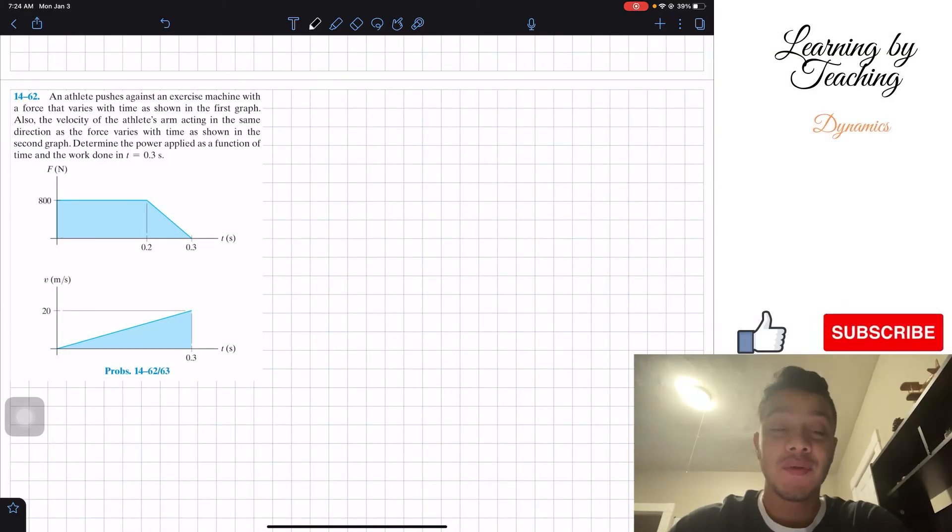Welcome back everyone to learning by teaching. Today we're in dynamics and we're going to solve problem 14.62. An athlete pushes against an exercise machine with a force that varies with time as shown in the first graph. Also, the velocity of the athlete's arm acting in the same direction as a force varies with time as shown in the second graph. Determine the power applied as a function of time and the work done in t equals 0.3 seconds.